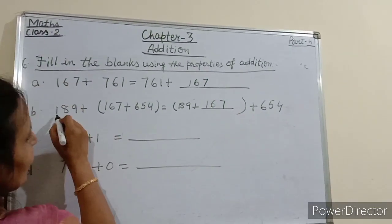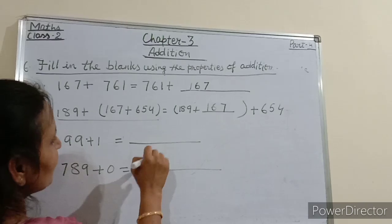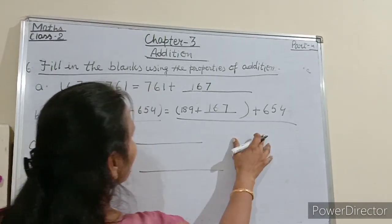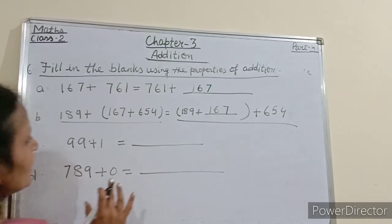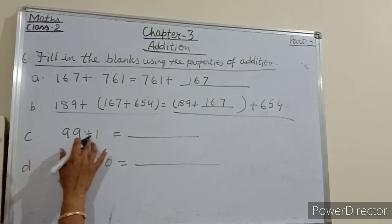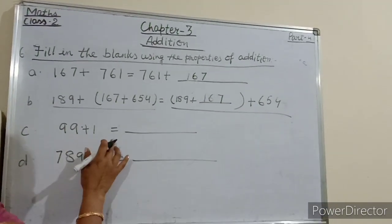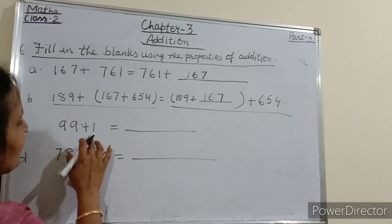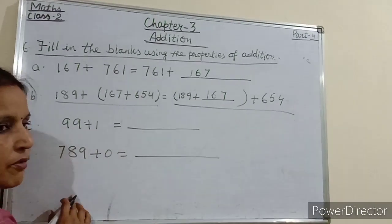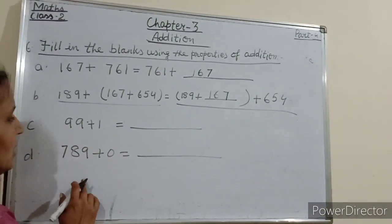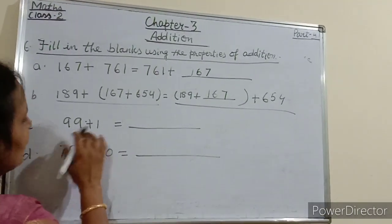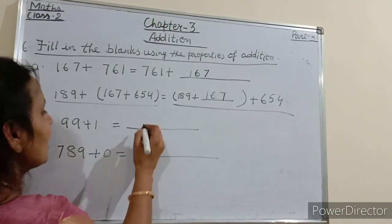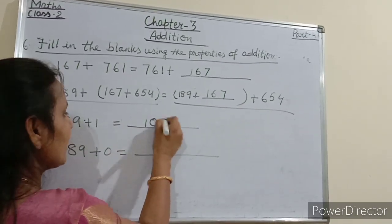If we add these numbers the answer will be the same. Now 99 plus 1 equals? Students, 99 plus 1 — what is the successor? 99 — yes. 99 plus 1 is 100, and the successor of 99 is also 100.